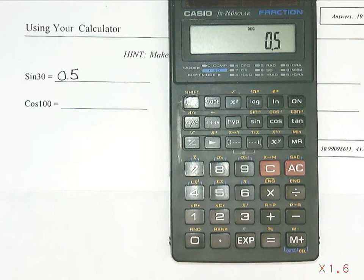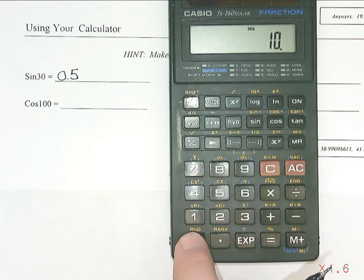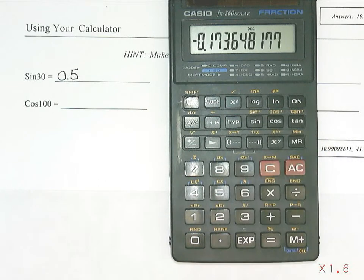If I wanted to do cosine of 100, I would put in 100 first, and then hit the cosine button.